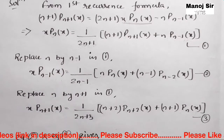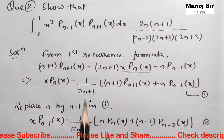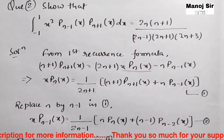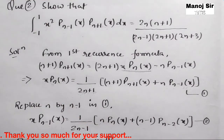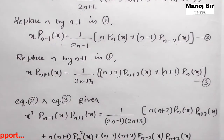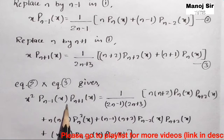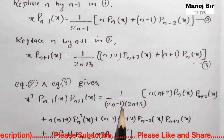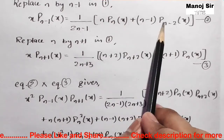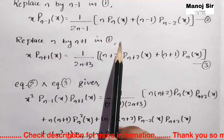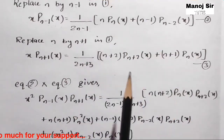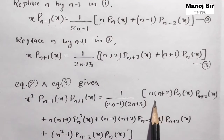If we multiply equations 2 and 3, we get x squared times P_{n-1}(x) times P_{n+1}(x), which is exactly the left-hand side of the question. We will then integrate this with respect to x with limits from minus 1 to 1. Multiplying equations 2 and 3, the right-hand side has a factor of 1/[(2n-1)(2n+3)]. Since each equation has two terms, we get four terms in total.